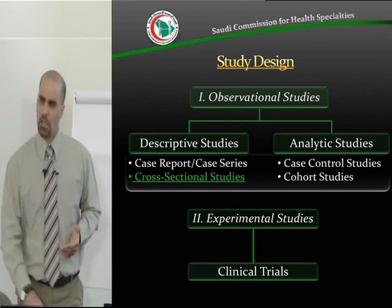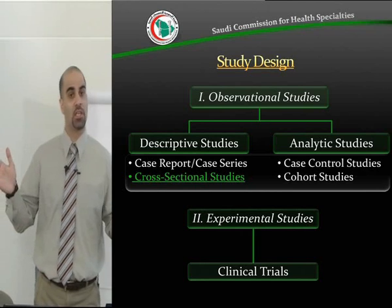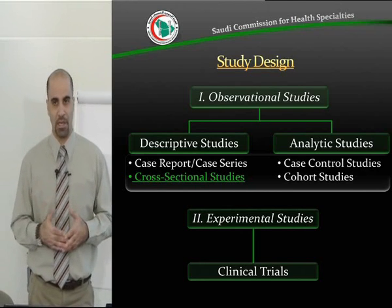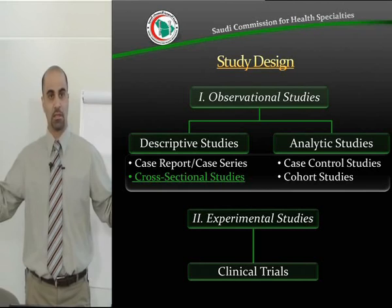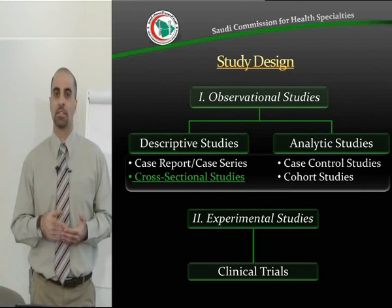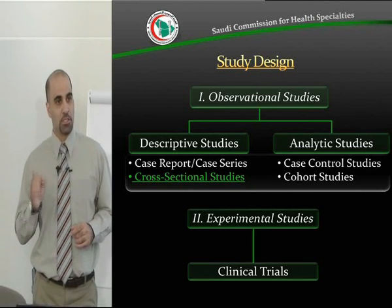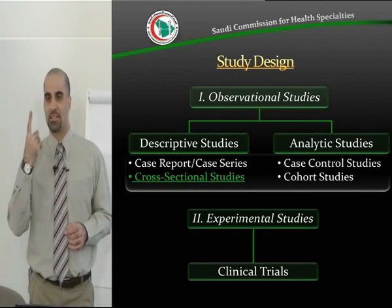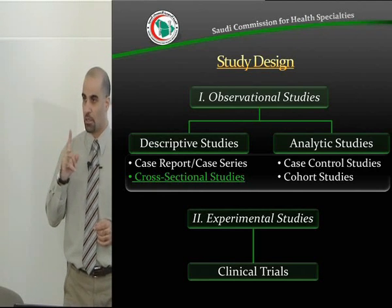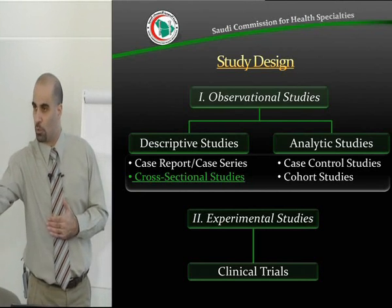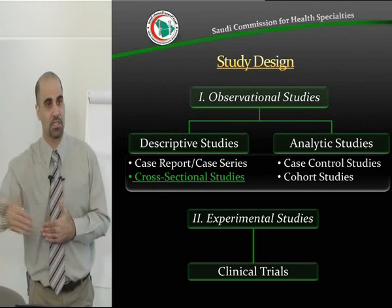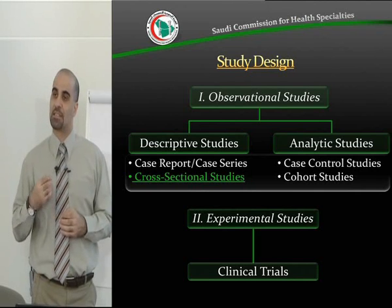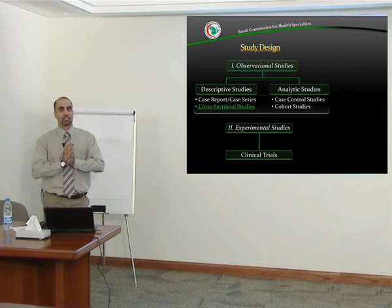Someone might ask: a cross-sectional study might take three months or one year to carry out, so how can it be at one point in time? I would say that cross-sectional refers to the patient rather than the whole study. Each patient in a cross-sectional study is seen at one time only, as compared to other studies where there is follow-up — a patient seen today, then after one month, then after one year. In a cross-sectional study, you take information from the patient once, and that's it.